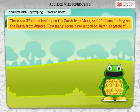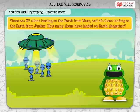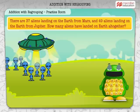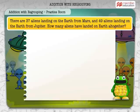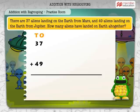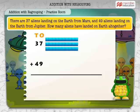There are 37 aliens landing on the Earth from Mars and 49 aliens landing on the Earth from Jupiter. How many aliens have landed on the Earth altogether? We are going to add 37 and 49. How many tens and ones are there in 37? Yes, there are 3 tens and 7 ones in 37.